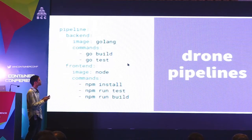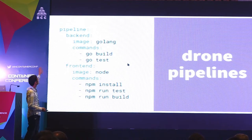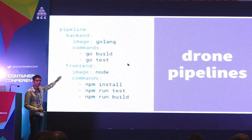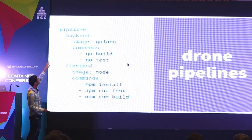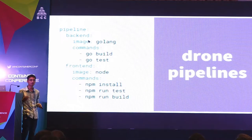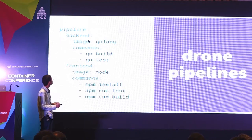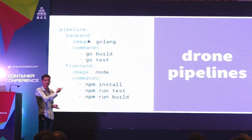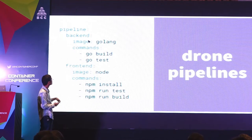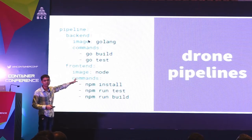In order to get to the final solution, we have to look at how Drone does things. From the Drone documentation, it has pipelines similar to Travis, Wercker, and other tools. The important thing is the image part — since Drone is Docker-native, everything runs as a Docker image itself. It picks up the golang image from docker.io/golang and runs go build and go test. Similarly, it picks up the node image and runs those commands.